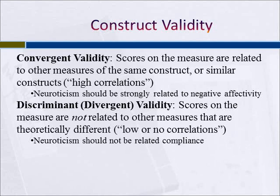We typically start by looking at convergent validity, which means that scores on the measure are related to other measures of the same or similar constructs—we see high correlations among those measures. For instance, neuroticism, one of the five-factor model personality traits representing general emotional instability and the tendency to experience negative emotion, should be strongly related to negative affectivity, a dispositional trait where people are predisposed to experiencing negative emotions. They are similar constructs and you would expect them to be related.